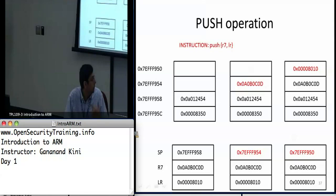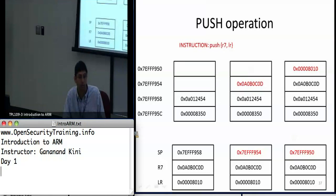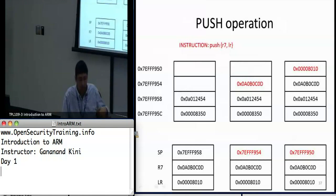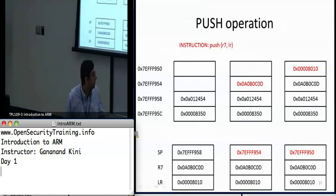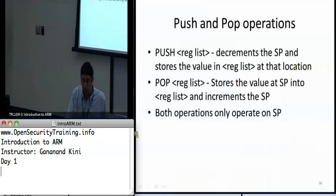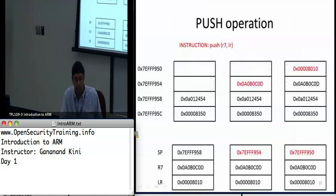The stack is a region in memory that grows towards lower memory addresses, where you can store variables. Pop works the same way but in reverse — it pops off the value first at the highest memory address back into a register, then goes in reverse order. ARM uses a load-store architecture, so you have to load from memory into the registers, and push and pop is one way of doing it.